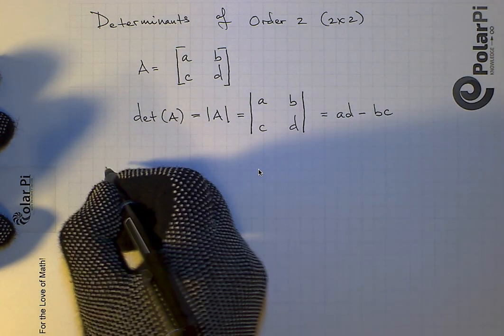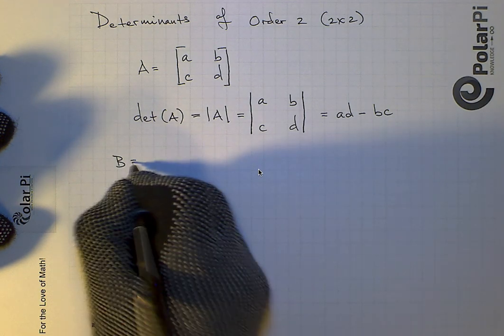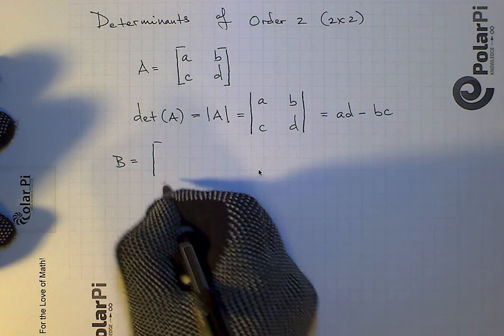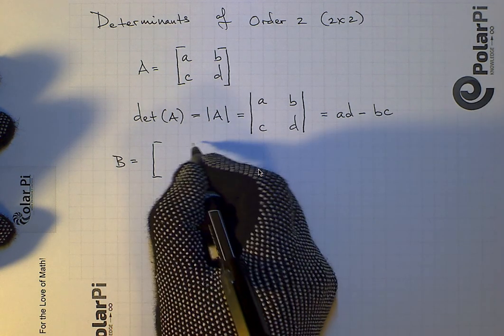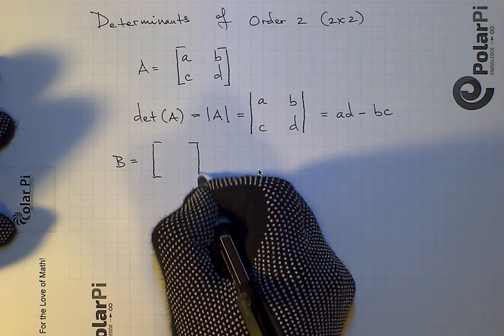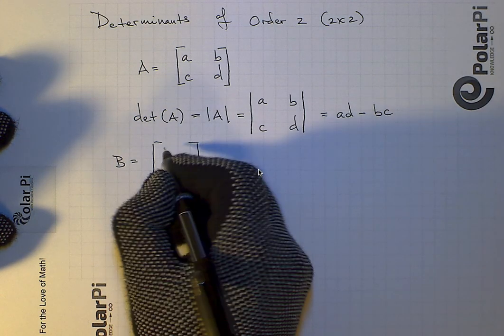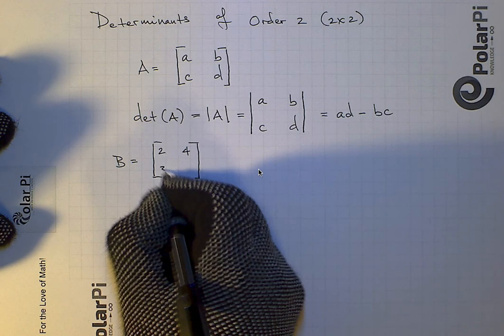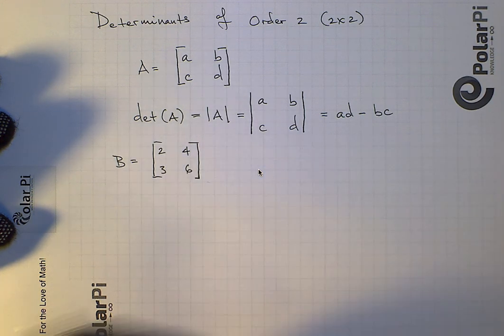All right, but here, let's say that we have a matrix B and simply give one easy example of how to find the determinant of a 2x2. So let's say that B has the entries, and I'm making this up as we go along, 2, 4, and then 3, 6.